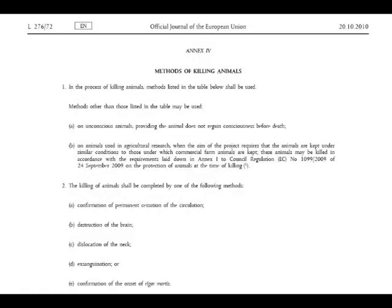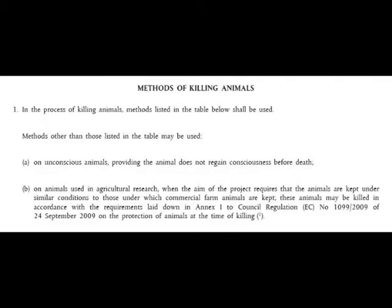Here is Annex 4, methods of killing. It's got parts one and two on this page and you can see it's in the Official Journal of the European Union. Part one reads: in the process of killing animals, methods listed in the table below shall be used.